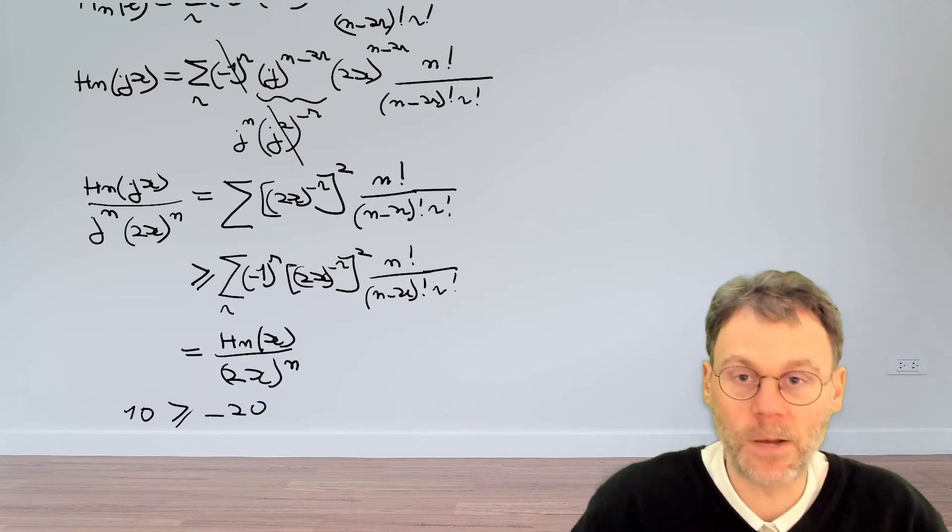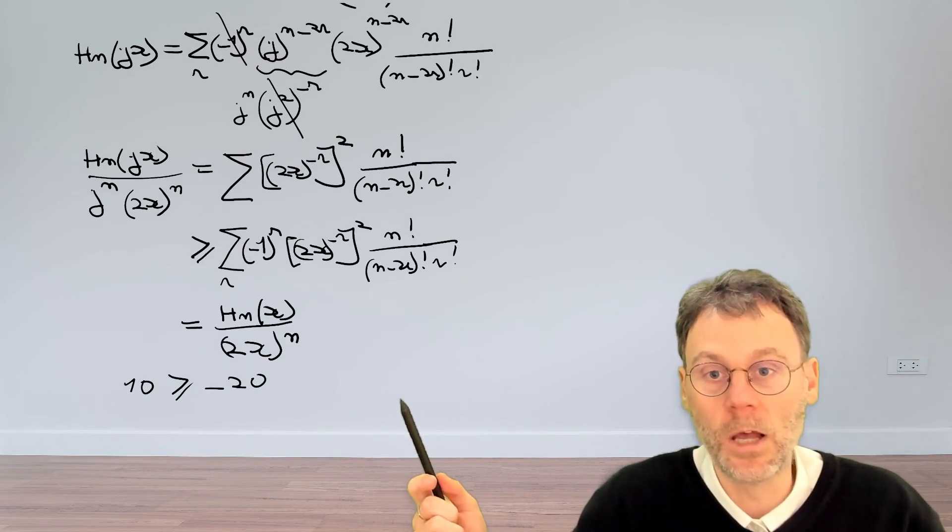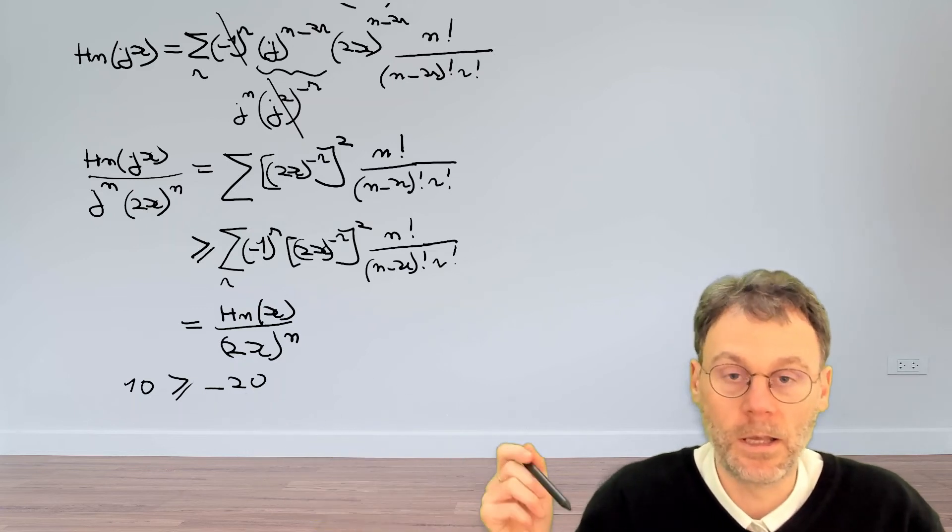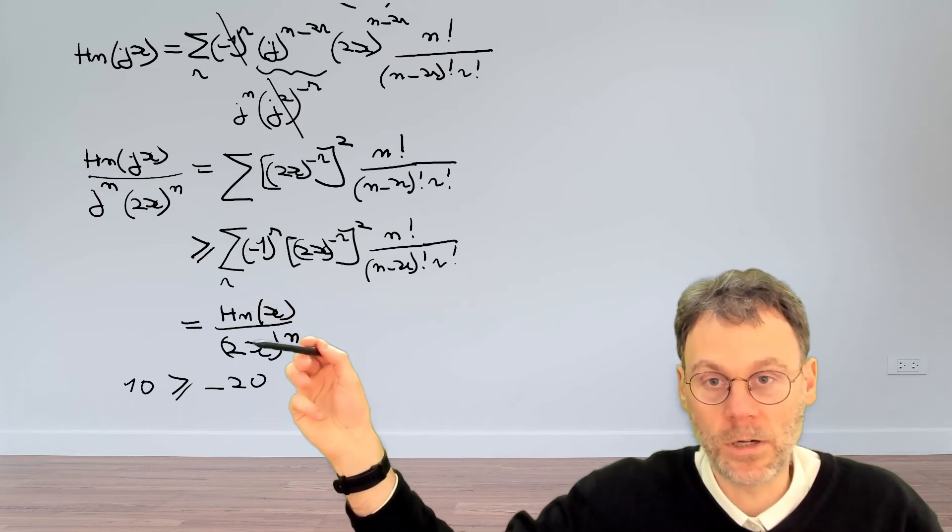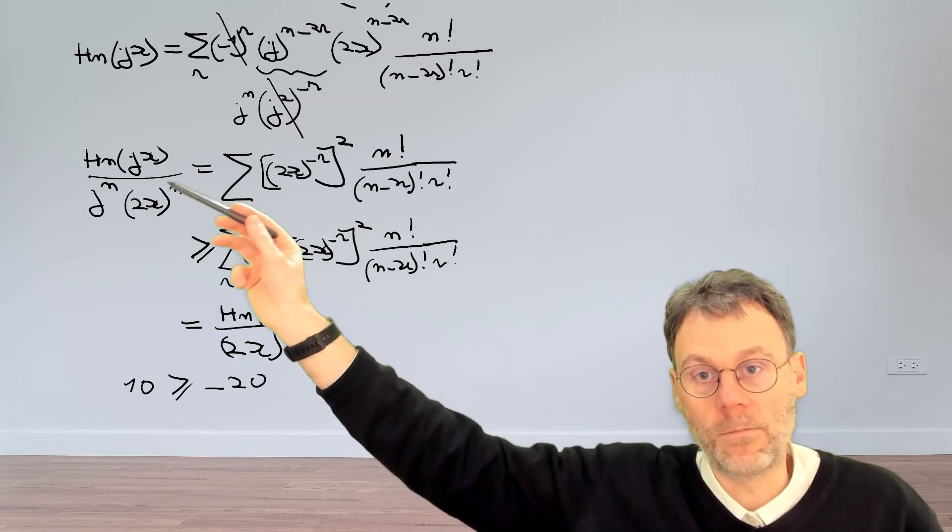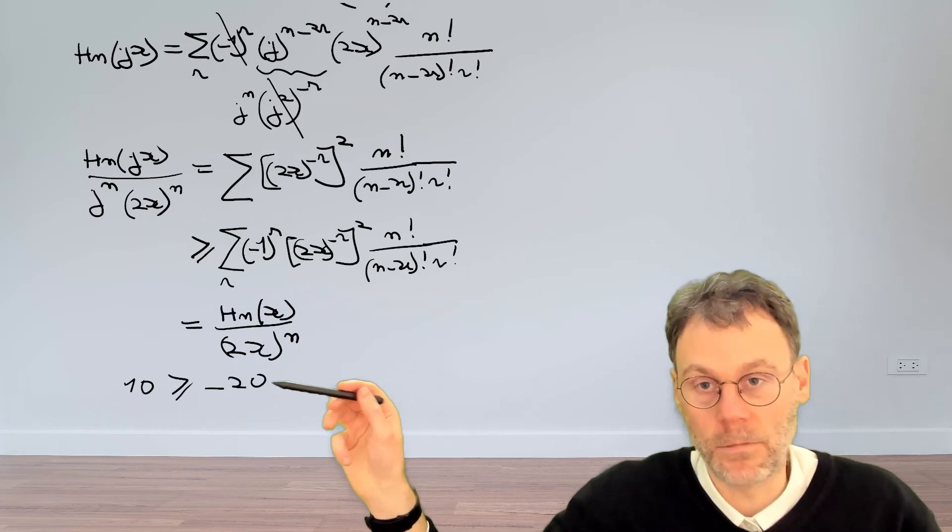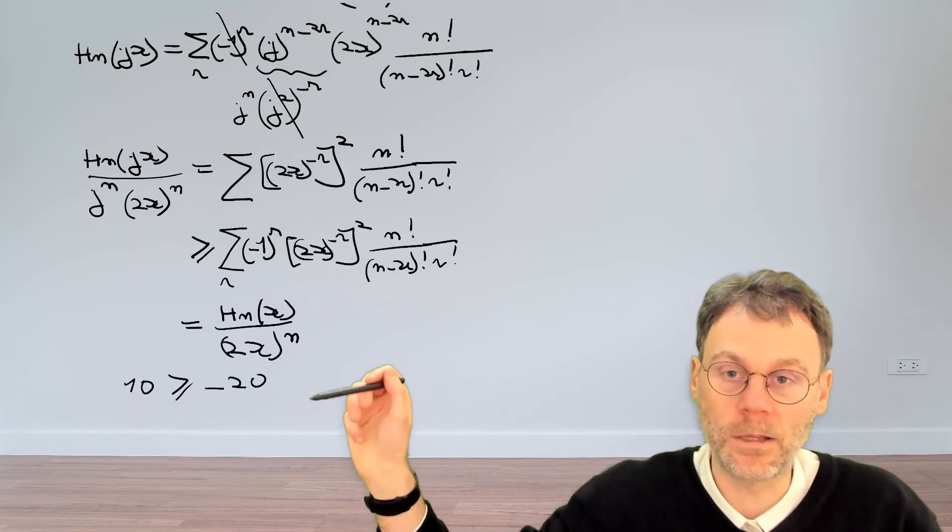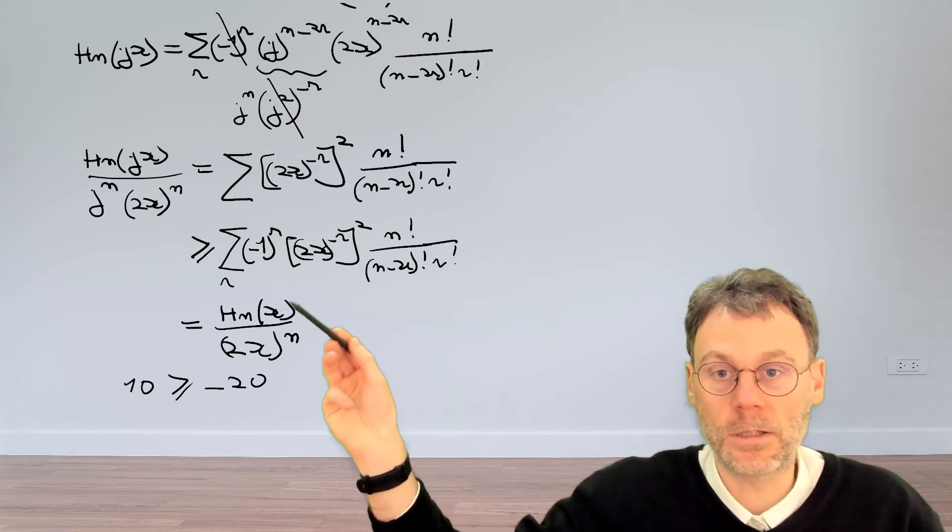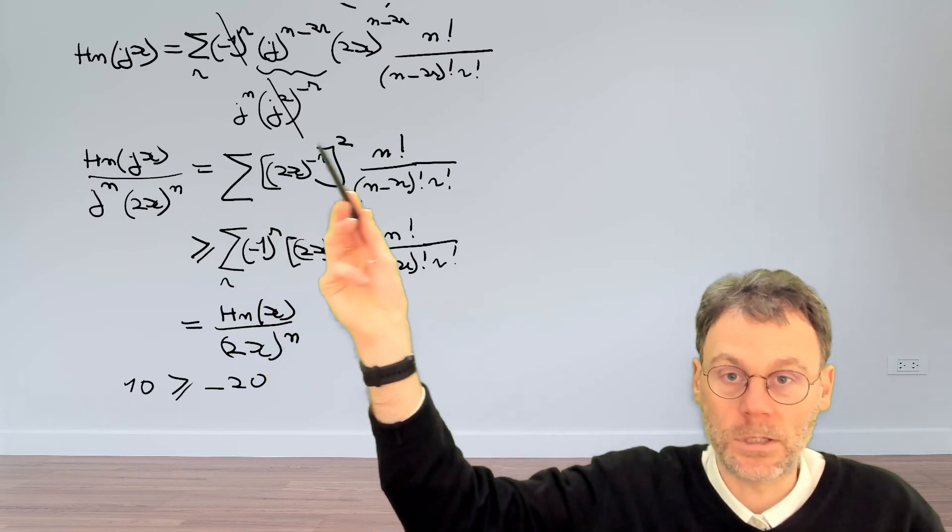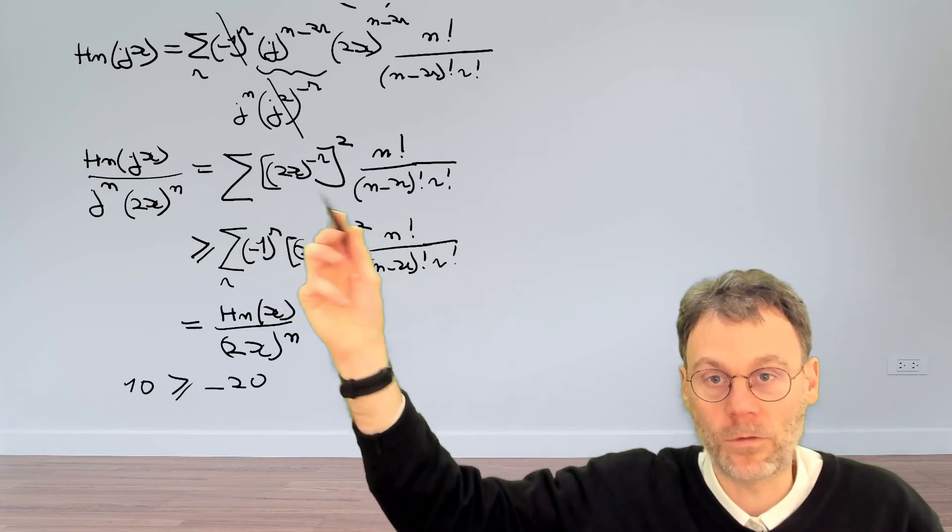But it could be that that number here is a very negative number. That's certainly possible. So it could be that this is, for example, minus 20. Now, if that's the case, then you can't just simply take absolute values to conclude that 20 is smaller than 10. That's nonsense, obviously. So we need to make sure that the number that we have here is not more negative than minus that number over there. Because if this is, in worst case scenario, minus 10, then we're still in business because 10 is smaller than or equal than 10. If it's minus 11, it won't work. If it's minus 9, it will work. So we need to make sure that this thing over here, and therefore this sum, sorry, this sum over here, is not more negative than minus what we have to start with.